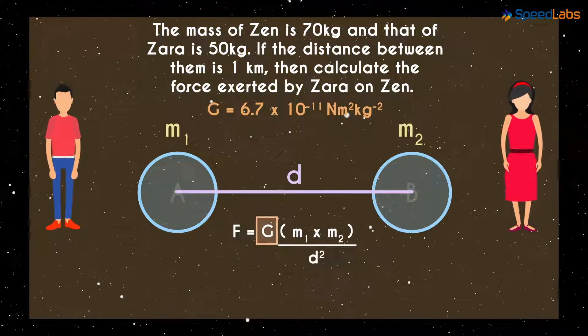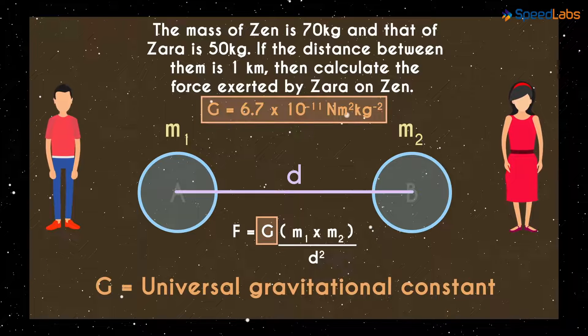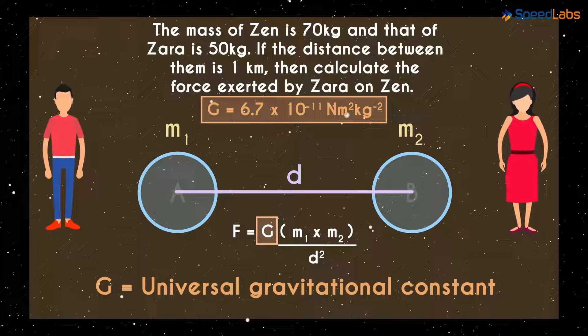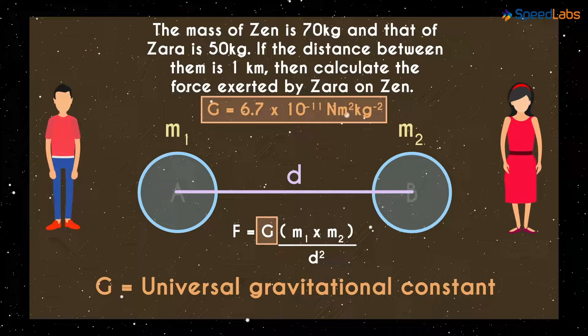And uppercase G here is called the Universal Gravitational Constant and its value is given to us as 6.7 times 10 raised to negative 11, Newton meter squared per kilogram squared.